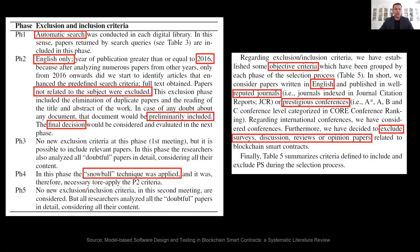From a paper on model-based software design and testing, they created multiple phases and checked inclusion and exclusion criteria at each phase. In phase one, papers returned by search queries in each digital library are included. In phase two, only English papers published between 2016 and 2020 are kept, and papers not related to the subject are excluded.